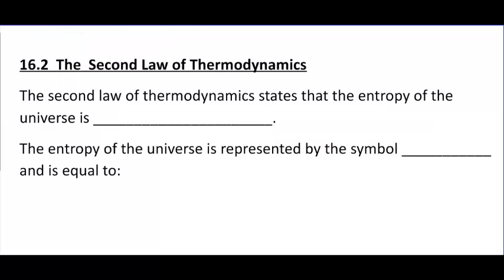We learned about the first law of thermodynamics in chapter six — that the energy of the universe is constant. Now it is time for the second law of thermodynamics, which deals with disorder or entropy. The second law of thermodynamics states that the entropy — the disorder of the universe — is constantly increasing.